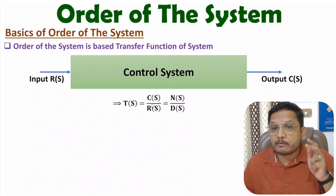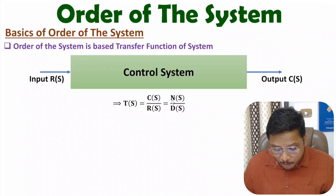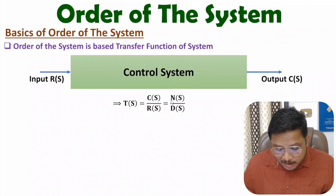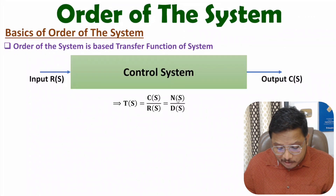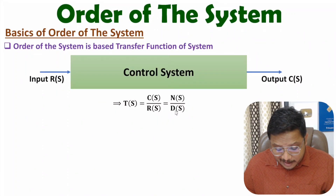Sometimes we may represent the transfer function in the form of a polynomial — here we have the numerator polynomial and here we have the denominator polynomial. Roots of the numerator polynomial N(s) give you the zeros of the system, and roots of the denominator polynomial give you the poles of the system.